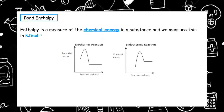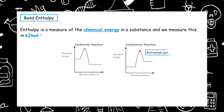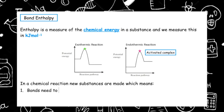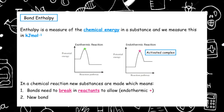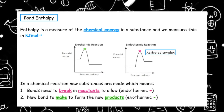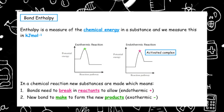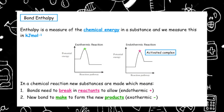When we draw out reaction profiles, at the activated complex this is where bonds break and where bonds can make. In a chemical reaction new substances are made, which means firstly bonds need to break in the reactants to allow new bonds to be made to form the new products. We need to put energy in to break bonds so this process is endothermic, and therefore the reverse — making our products — is an example of an exothermic reaction.